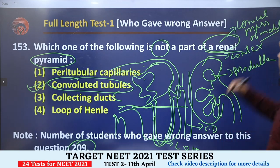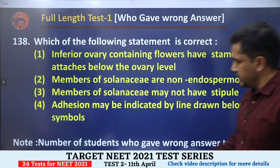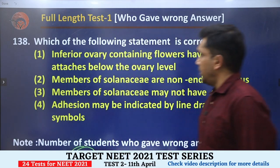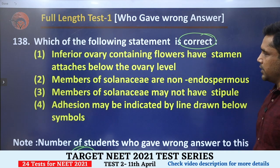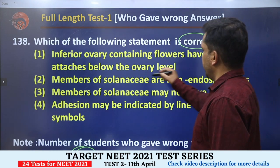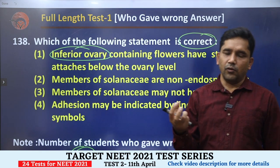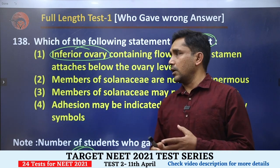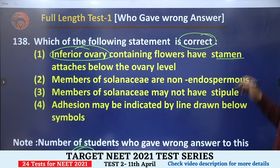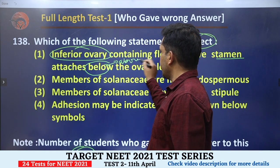Now question number 138, attempted wrong by 164 students. Which of the following statements is correct? The question asks about inferior ovary — flowers with an inferior ovary have stamens attached below the ovary level. However, this is wrong: when the ovary is inferior (positioned below), all floral parts including stamens, calyx, and corolla should be ABOVE the ovary level.